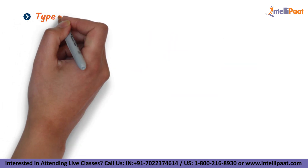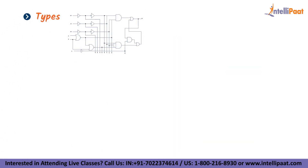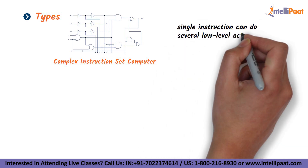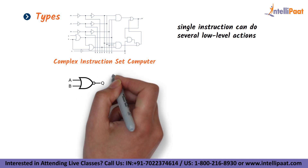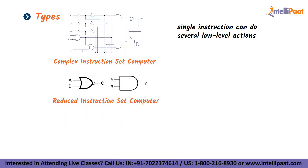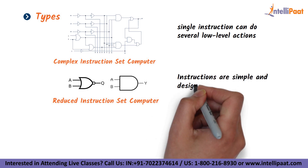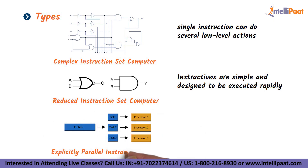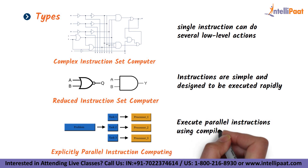There are three types of microprocessors. The first is CISC — complex instruction set computer — a computer architecture in which a single instruction can perform several low-level actions. Next is RISC — reduced instruction set computer — where instructions are simple and designed to be executed rapidly. Lastly, we have EPIC — explicitly parallel instruction computing — which allows computers to execute parallel instructions using compilers.